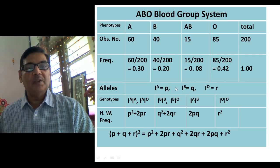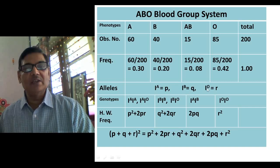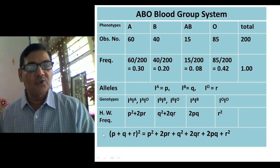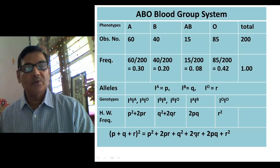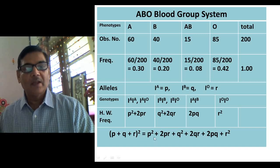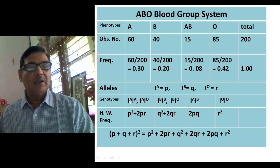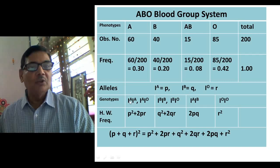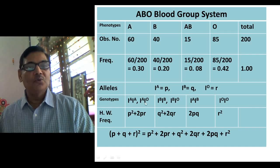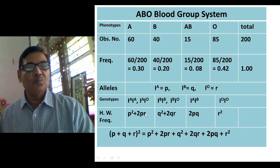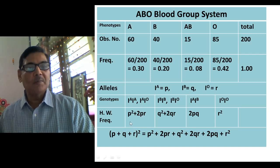P, Q, and R represent the frequencies of the three alleles. The binomial expansion of (P + Q + R)² gives: P² + 2PR + Q² + 2QR + 2PQ + R². You can map these genotypic frequencies to the real genotypes. Individuals who are IAIA are represented by P², and heterozygous IAIO individuals are represented by 2PR, since P stands for IA and R for IO. So blood group A is represented by P² + 2PR.